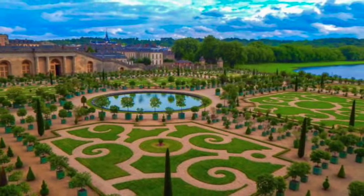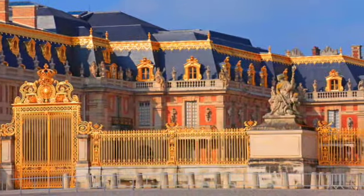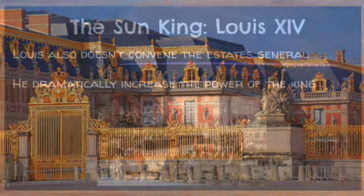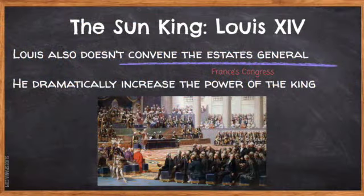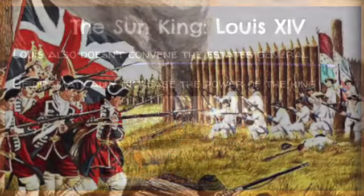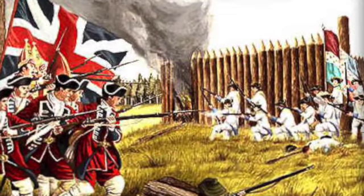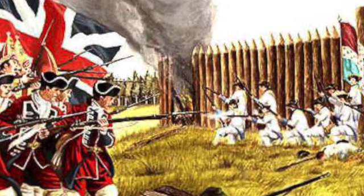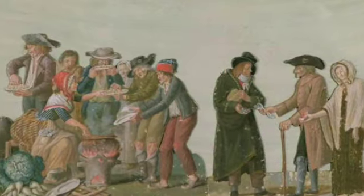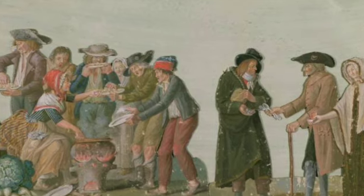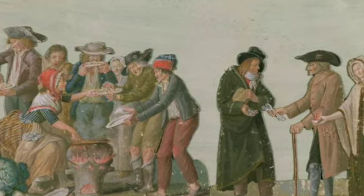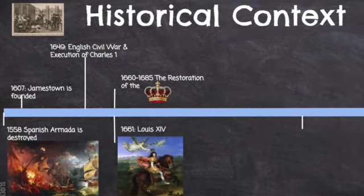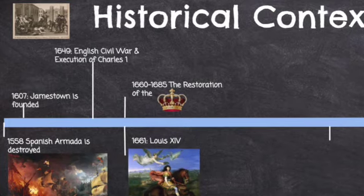During his tenure, Louis doesn't convene the Estates General — France's Congress — so there's no real check on the king's authority. During his 72-year reign from 1667 to 1713, France fights four wars and runs up staggering deficits. By the end of Louis XIV's tenure when he dies in 1715, France faced enormous debts and a legion of enemies.